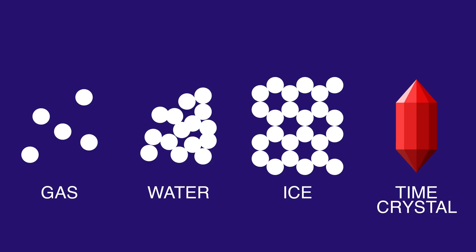The time crystal, on the other hand, is the first out-of-equilibrium phase. It has order and perfect stability, despite being in a constantly evolving state.